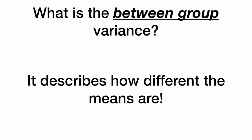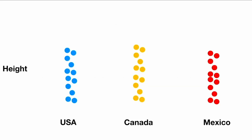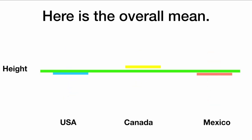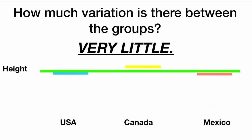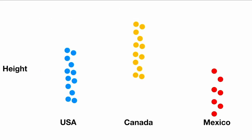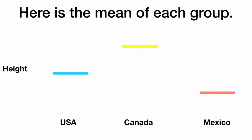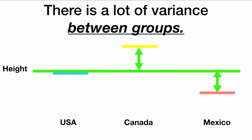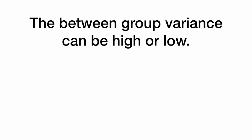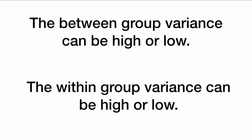We also have between-group variance, and this describes how different the means are. Here we have three groups — the mean of each group and the overall mean. If all three groups are very close to the overall mean, there is very little variance between them. But if the group means differ quite a bit from the overall mean, there is a lot of variance between the three groups. So the between-group variance can be high or low, and the within-group variance can be high or low.